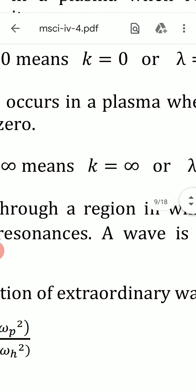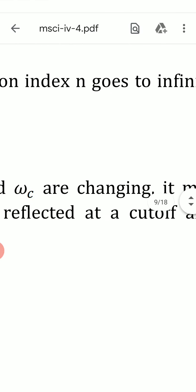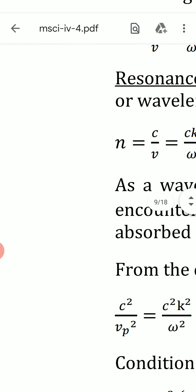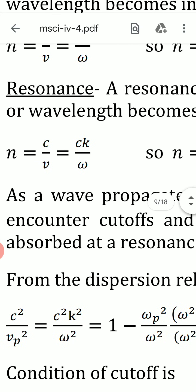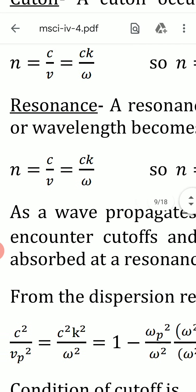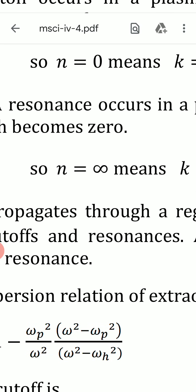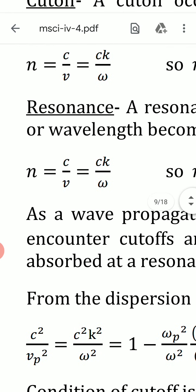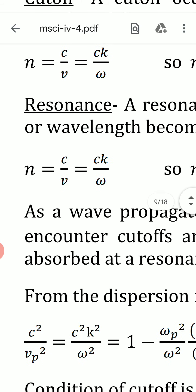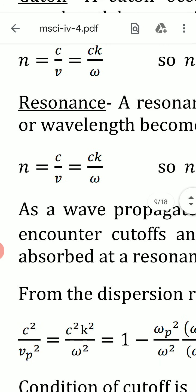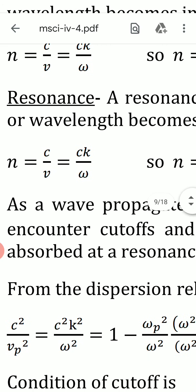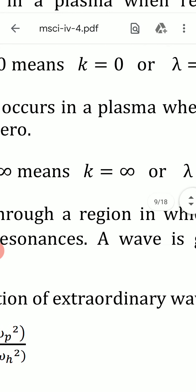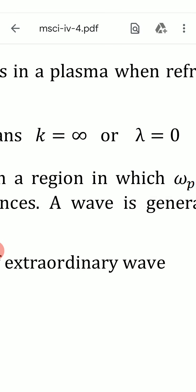Resonance: a resonance occurs in a plasma when the refractive index n goes to infinity, or the wavelength becomes 0. The condition for resonance is n = infinity. Since n = ck/ω, n = infinity means k = infinity. And since k = 2π/λ, k = infinity means λ = 0.